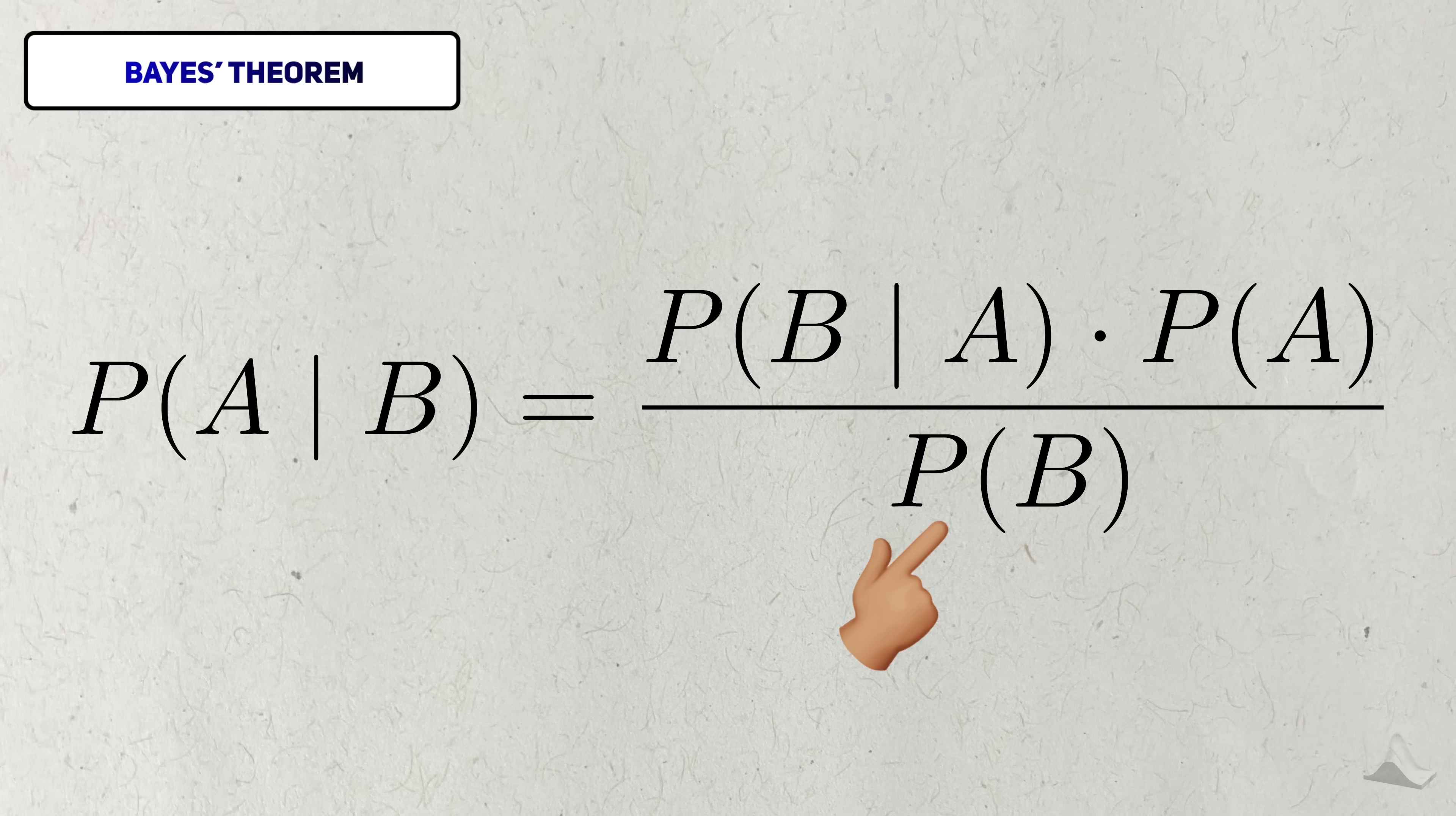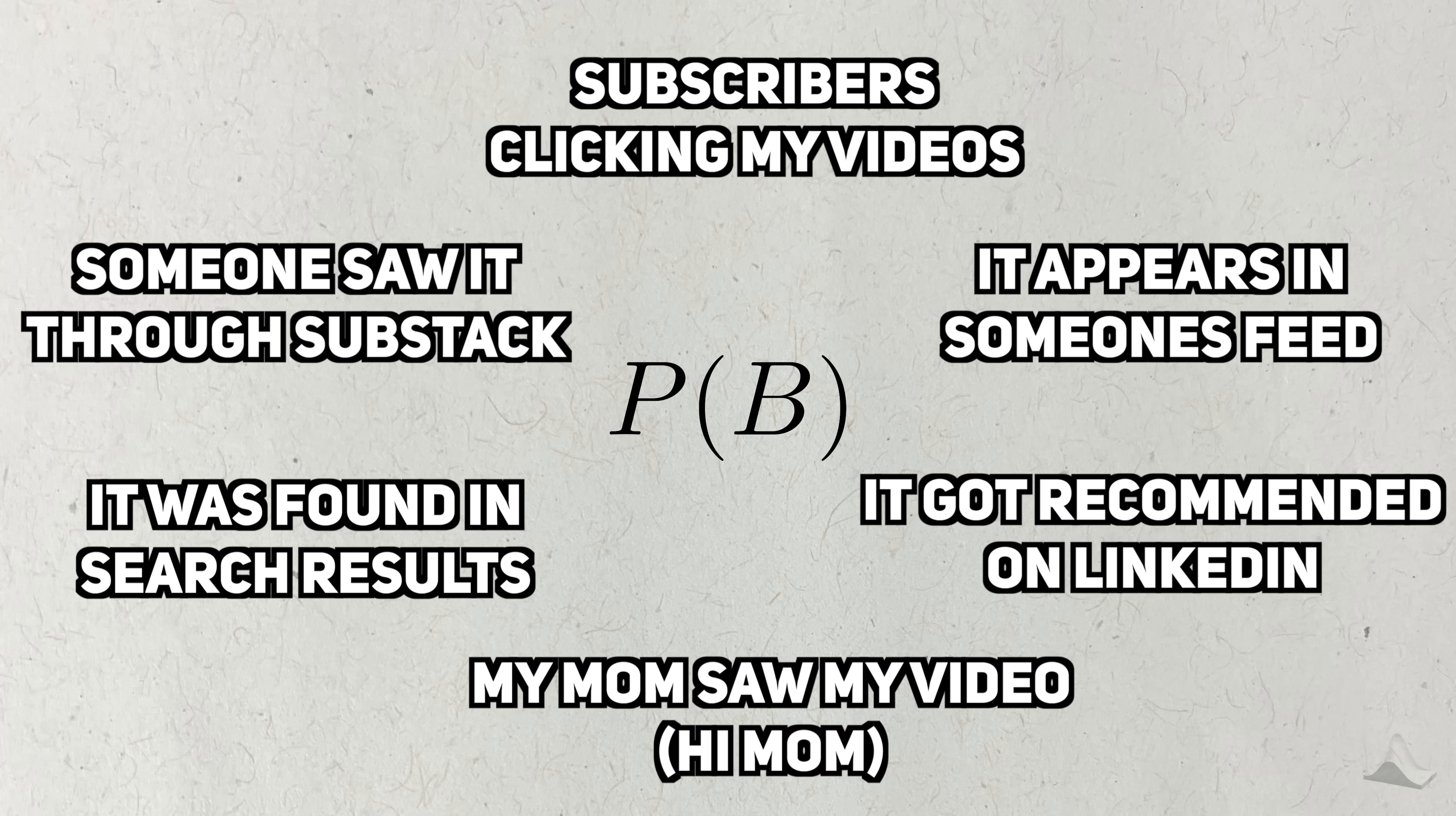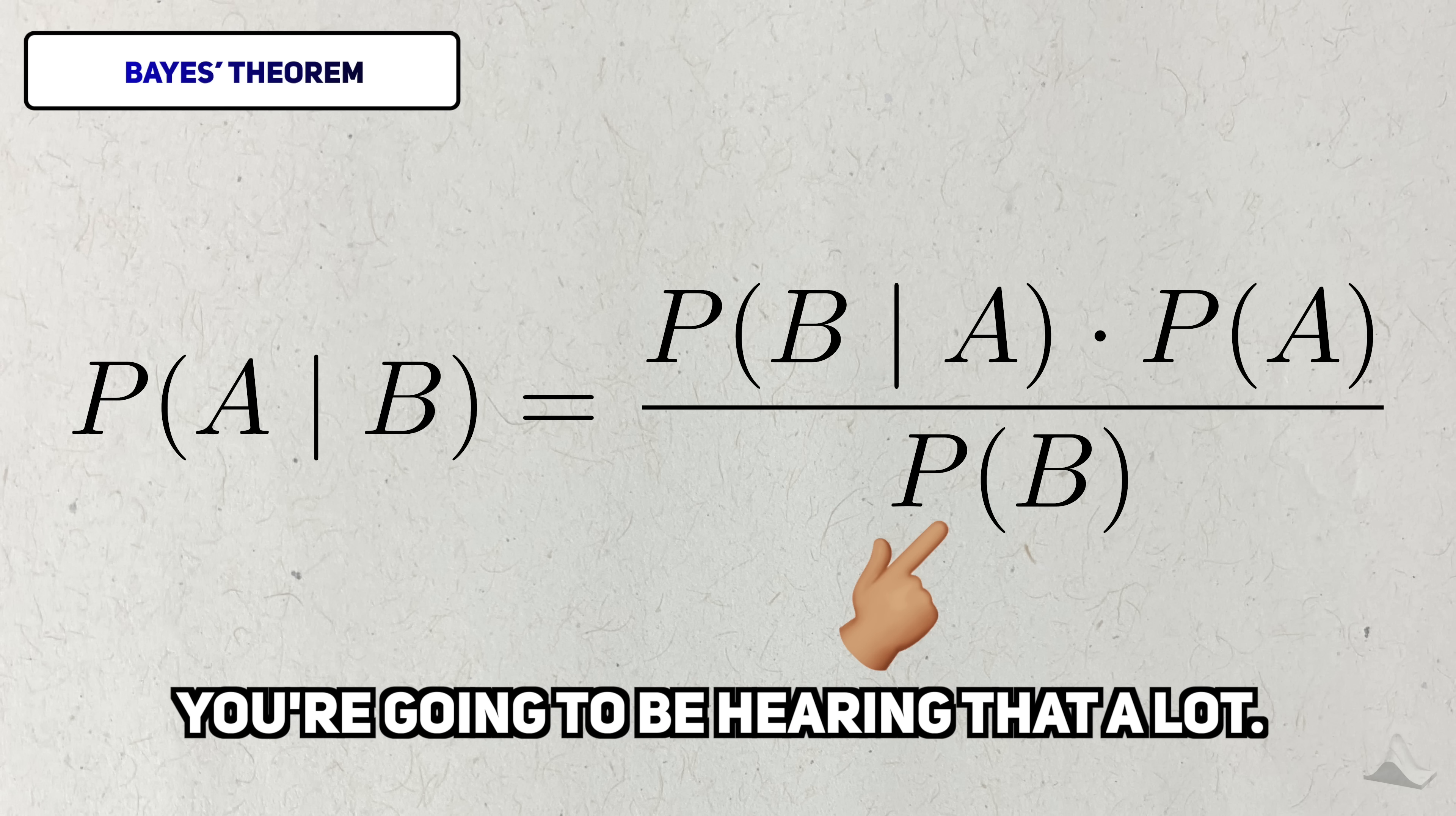This term in the denominator is tricky. It represents the marginal probability that someone will watch this video. There are several different ways that new watchers will come across my video, and it's hard to account for every one. I would need to account for all these different ways that someone might see my thumbnail and watch. It's easy to stick this probability in the denominator and call it a day, but it's a completely different beast to actually calculate. And spoiler alert, that's going to be a recurring issue throughout this video.